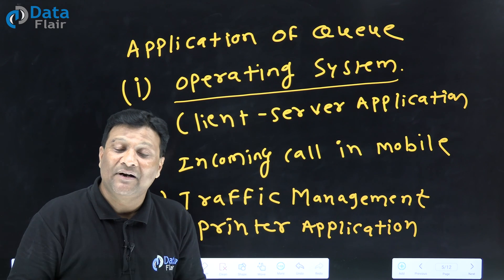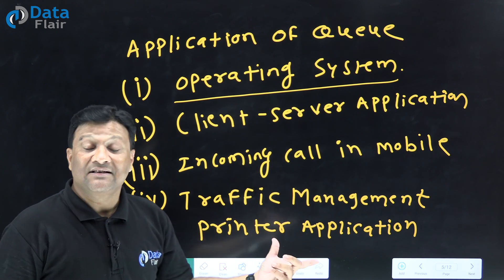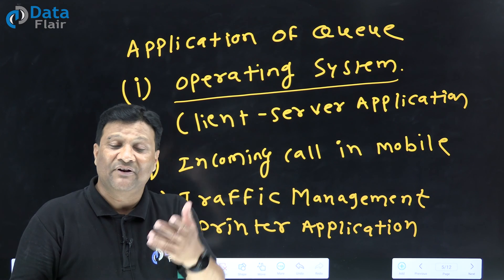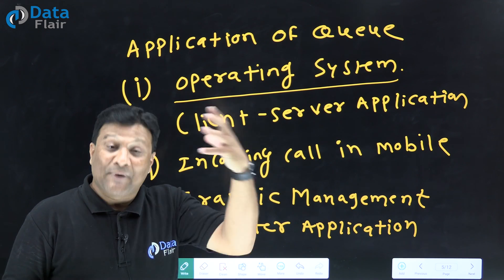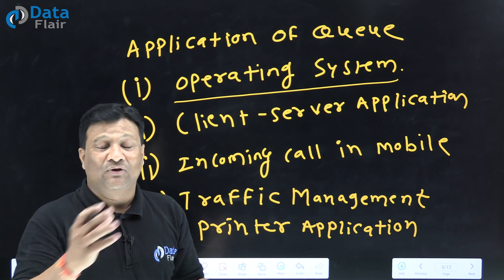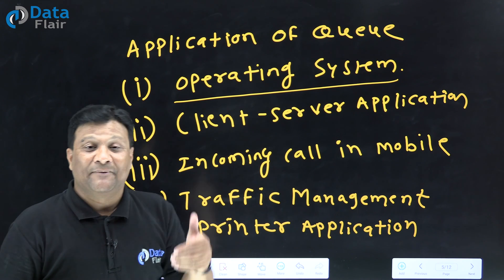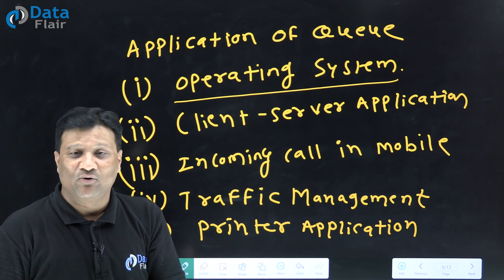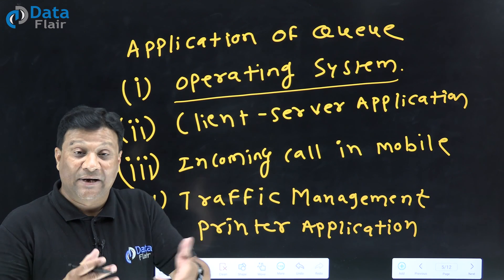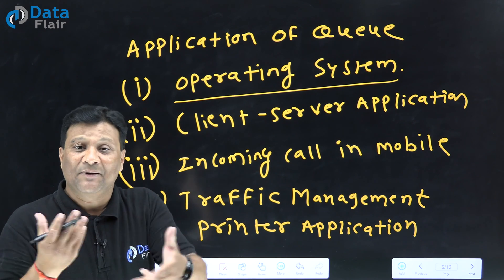Messaging service implementation also works this way. Printer, traffic management system - when you design a traffic management application, you have to follow Queue concept using first-in-first-out. Printer application also uses Queue in the system. They follow Queue concept - whichever page comes first will be printed first. If you give 10 page print requests, first-in-first-out - the page that came first will get printed first.